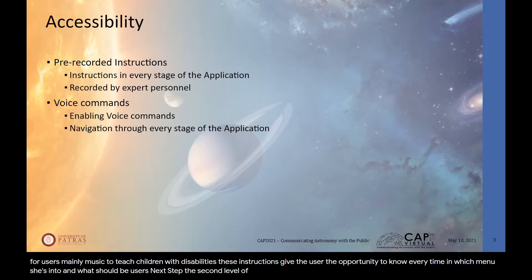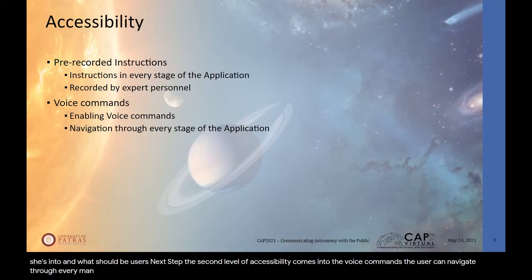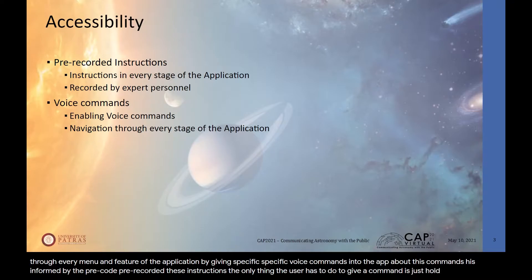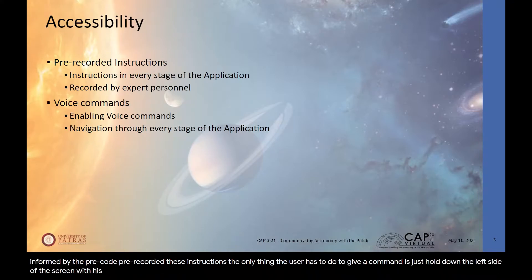The second level of accessibility comes through voice commands. The user can navigate through every menu and feature of the application by giving specific voice commands. About those commands, the user is informed by the pre-recorded instructions. The only thing the user has to do to give a command is hold down the left side of the screen with their finger and release it after giving the instruction.